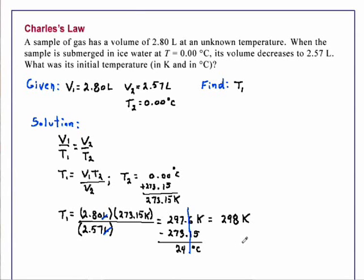Now we should check to make sure that our answer makes sense. Our volume went from 2.80 liters to 2.57 liters, that's a decrease in volume. We know that a decrease in volume is caused by a lowering of temperature, so if our final temperature was zero, our beginning temperature must be greater than that, so 24 degrees C is a logical answer.